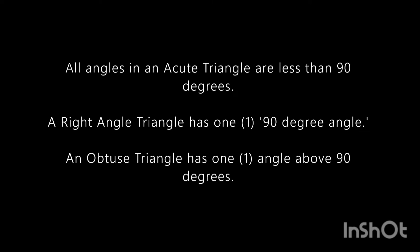All angles in an acute triangle are less than 90 degrees. A right angle triangle has one 90 degree angle, and an obtuse triangle has one angle above 90 degrees.